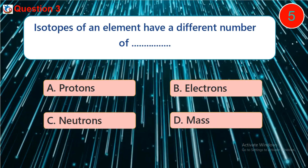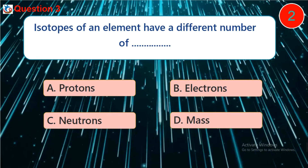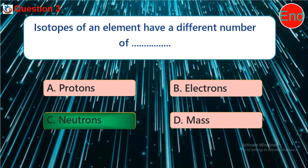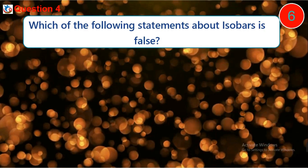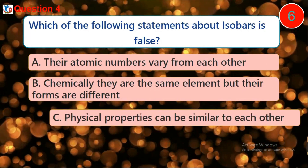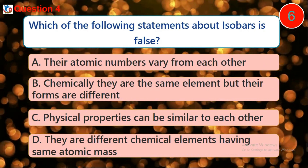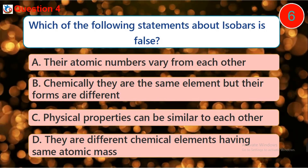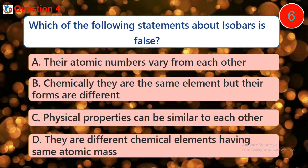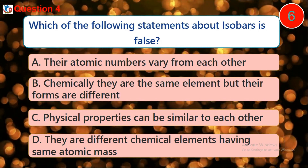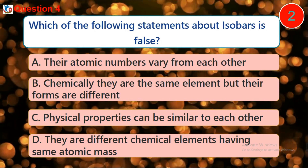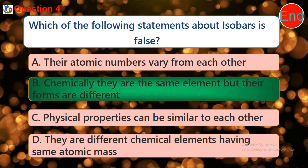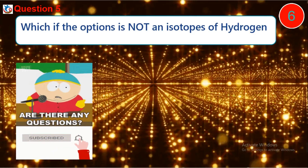Question four: which of the following statements about isobars is false? A. the atomic numbers vary from each other, B. chemically they are the same element but their forms are different, C. physical properties can be similar to each other, D. they are different chemical elements having the same atomic mass.